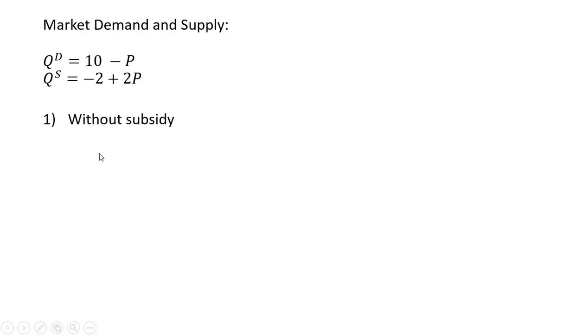So what I'll first do is find the equilibrium price and quantity without a subsidy. Setting quantity demanded equal to quantity supplied, setting these two equations equal to one another, and solving for price.